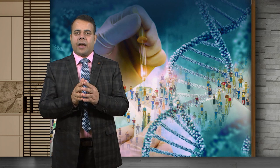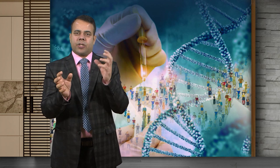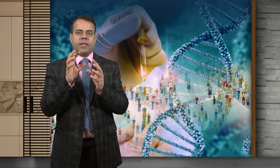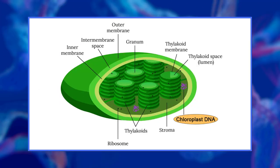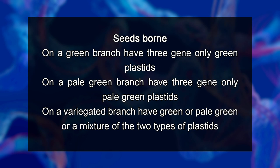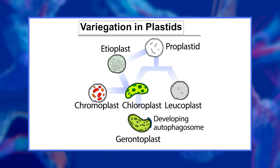It is clear that variegation is determined by agencies transmitted through the female and is not influenced by the type of pollen used from the male. These agencies are the chloroplastids, which are capable of self-duplication and are transmitted from generation to generation through the cytoplasm of the egg. Seeds born on a green branch have only green plastids; seeds born on a pale green branch have only pale green plastids; and seeds born on a variegated branch have green, pale, or a mixture of both types of plastids. Variegation is thus a hereditary character determined by stable, self-duplicating extranuclear particles called plastids.